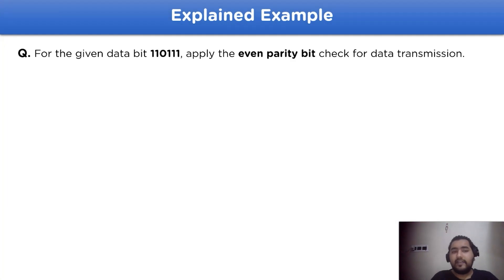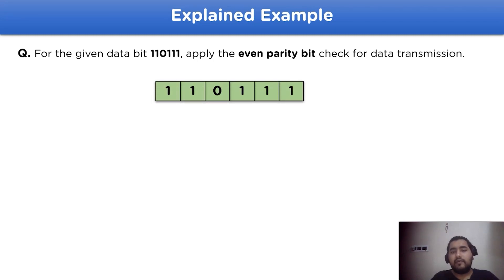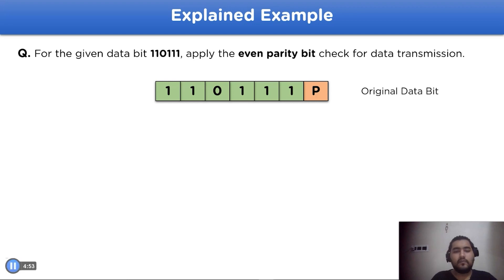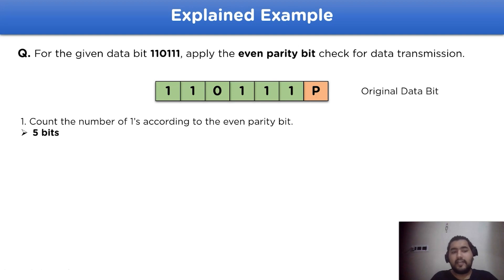The question is: for the given data bit 110111, apply the even parity bit check for data transmission. For the first step, take the original data 110111 and the parity bit value is to be given as P. According to the next step, we count the number of ones in the original data, which comes out to be five — meaning there are five ones, representing an odd number.